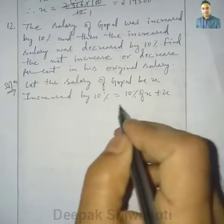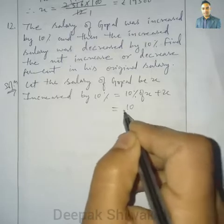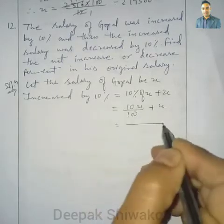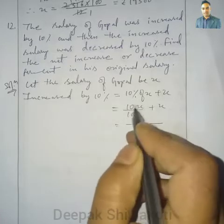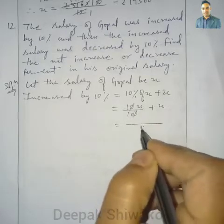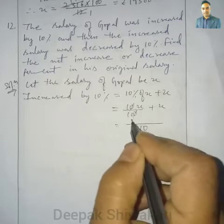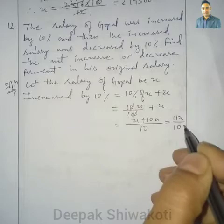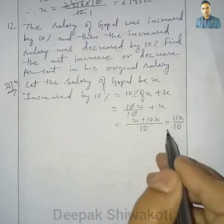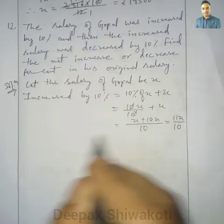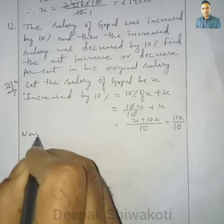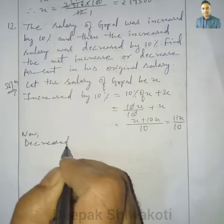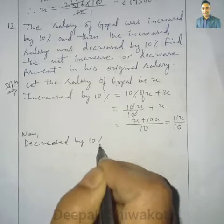Increasing by 10 percent: 10 by 100 of x plus x. Taking LCM as 100, we can cancel the zero, so LCM is 10. x plus 10x gives 11x, so 11x by 10. After increasing by 10 percent, the salary becomes 11x by 10.